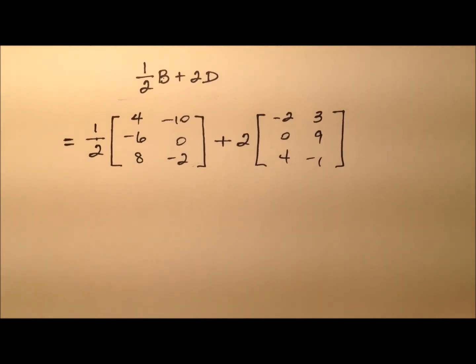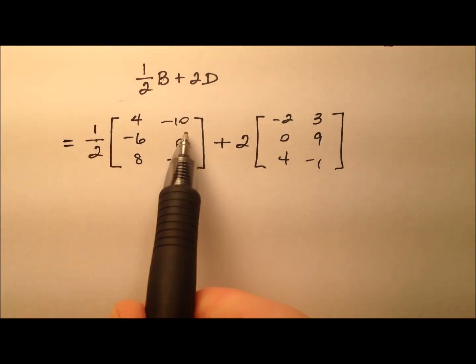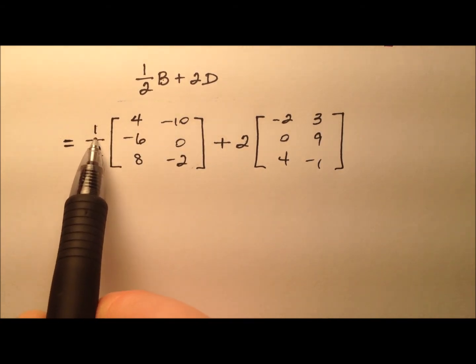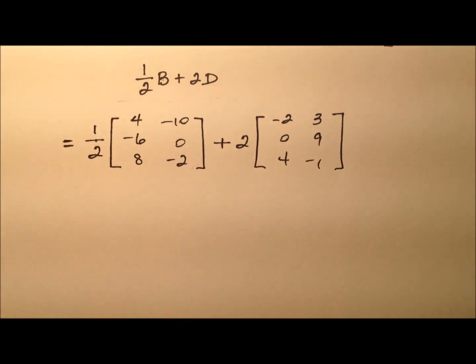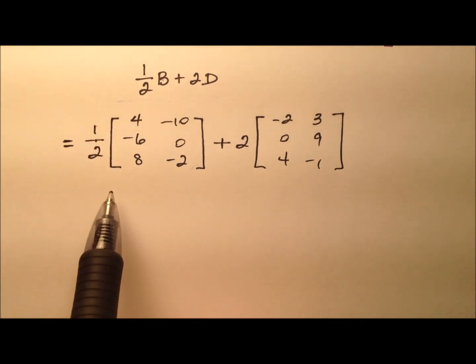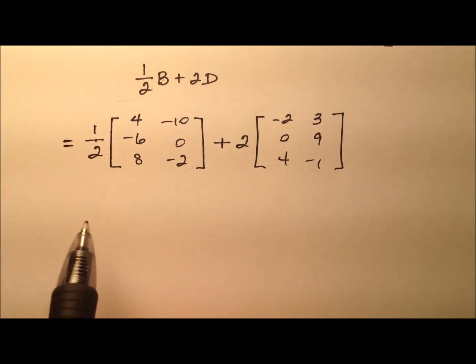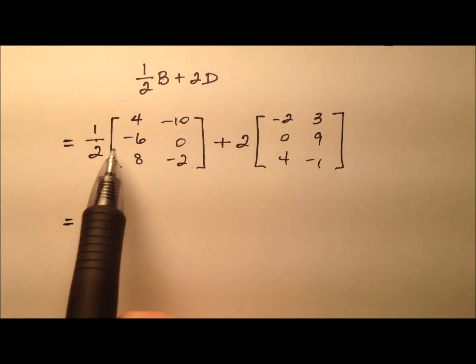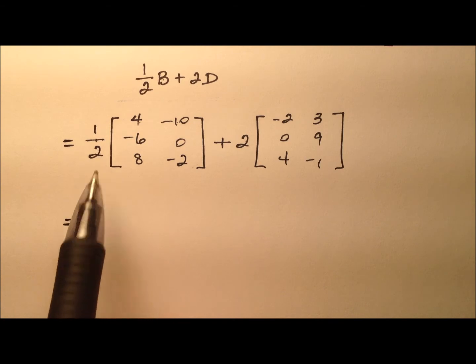So now let's go ahead and focus in on this scalar multiplication. So the 1 half out front really just means we're going to distribute this 1 half to every single entry. And so you can think of it as multiplying by 1 half or dividing by 2. So let's go ahead and take each of these entries and let's just cut it in half.